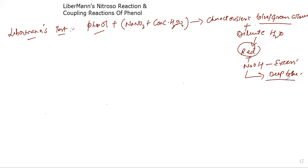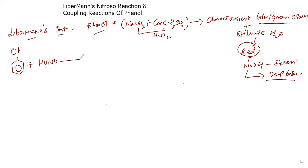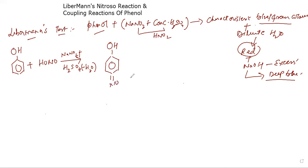Now let's look at the reaction that takes place and the compounds responsible for this color change. You take phenol and warm it with sodium nitrite and concentrated sulfuric acid. Basically, HNO₂ (nitrous acid) is formed from sodium nitrite plus sulfuric acid. A molecule of water is eliminated and a nitroso group is introduced at the para position, forming p-nitrosophenol.